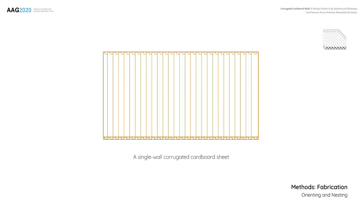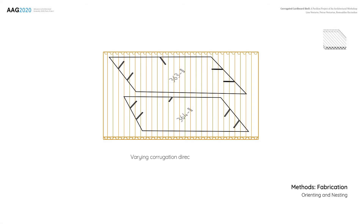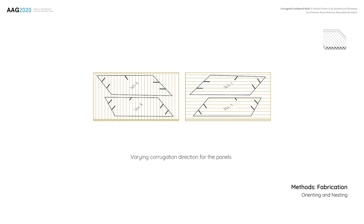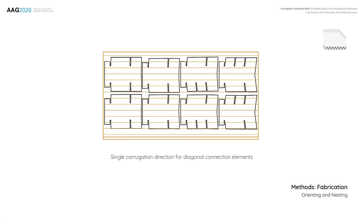The directionality of material corrugation strongly affects panel performance under stress in different directions. After physical testing, the decision was made to mix corrugation among the panels, ensuring that the same set of panels has varying orientations for the inner and outer layers. The single corrugation direction — the best performing in compression — was chosen for the diagonal connecting elements.